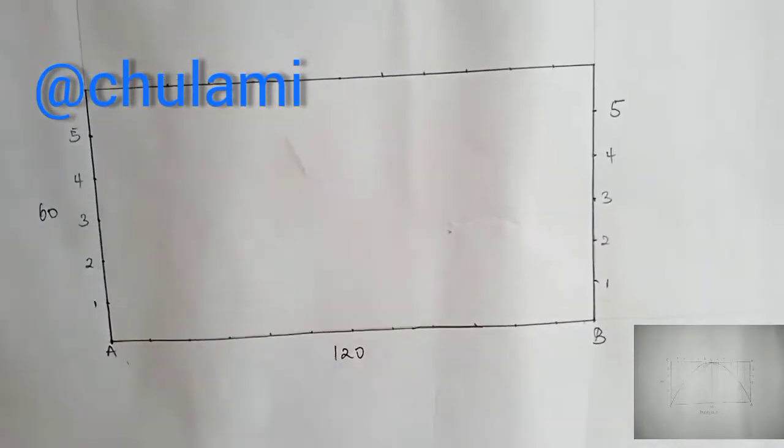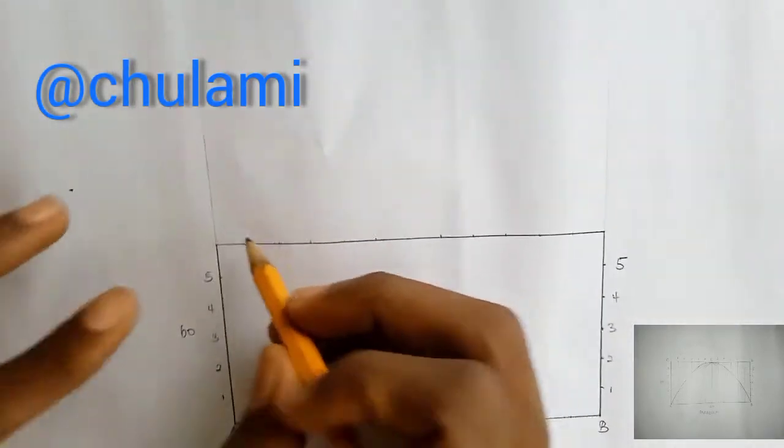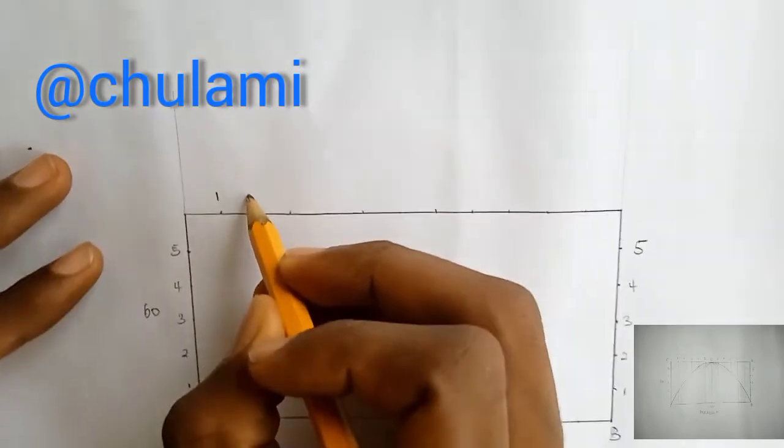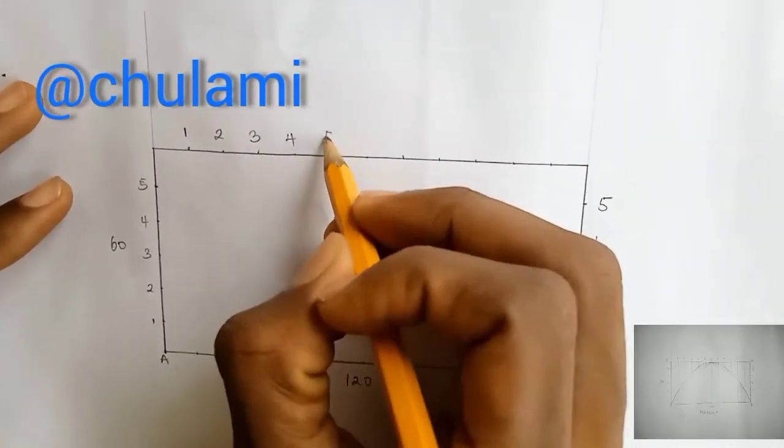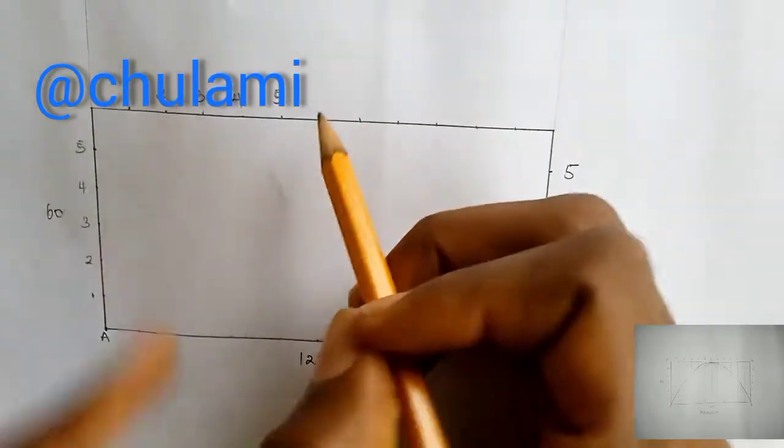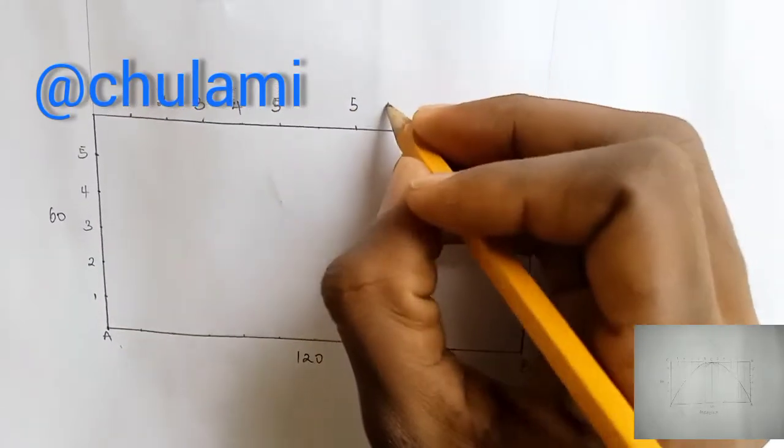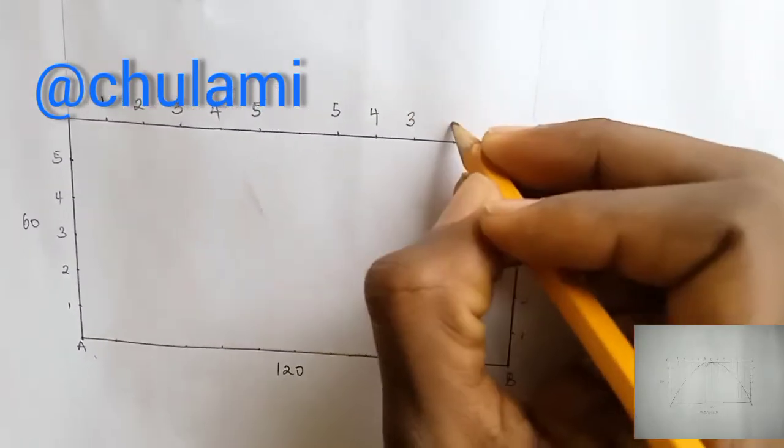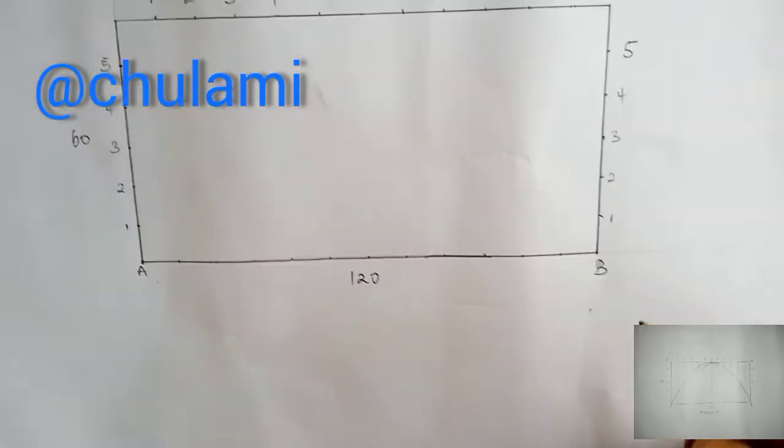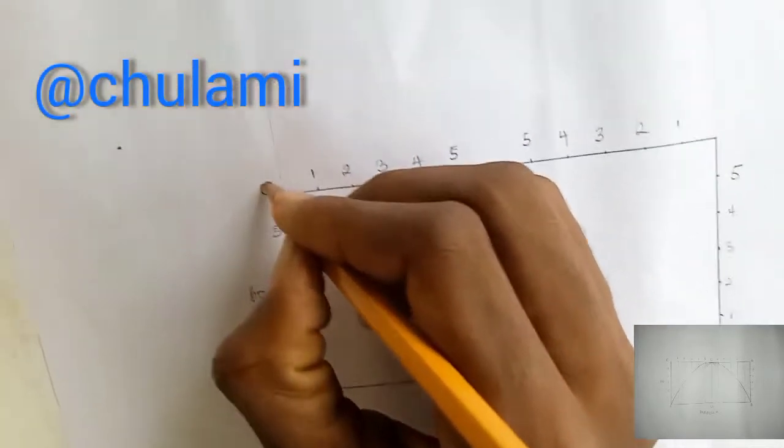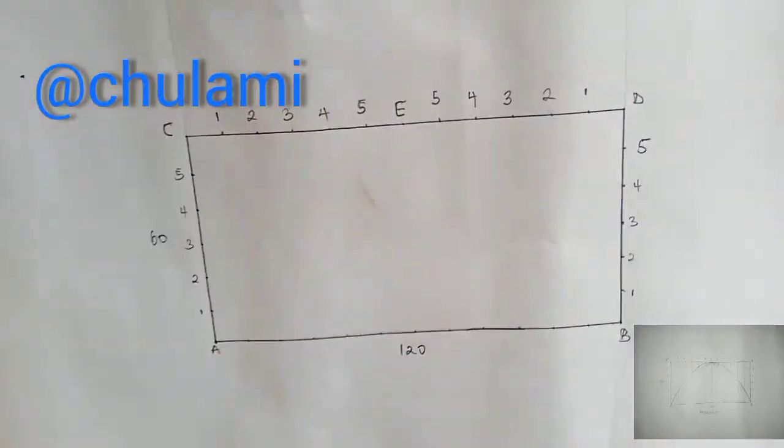So I've done the divisions. Now I'll number them. Now, this is the way I'm numbering it: 1, 2, 3, 4, 5. Now we'll skip the center line and start numbering: 5, 4, 3, 2, 1. I have a reason why I'm doing this. We can call here A, B. Call here C, D, and call this part E. This center point, we can call it E.